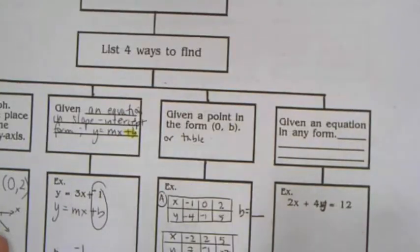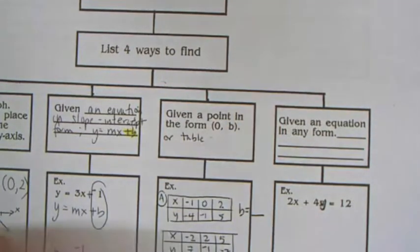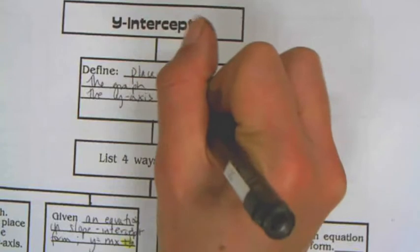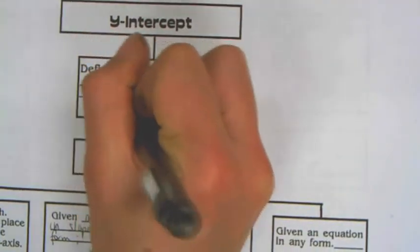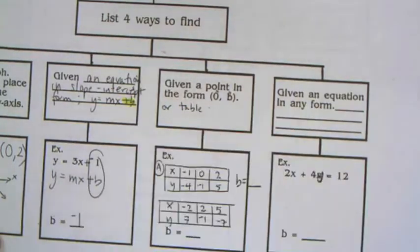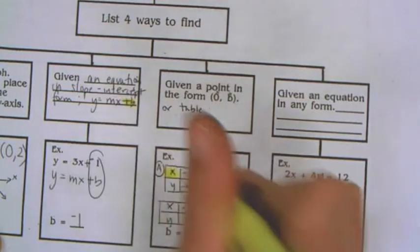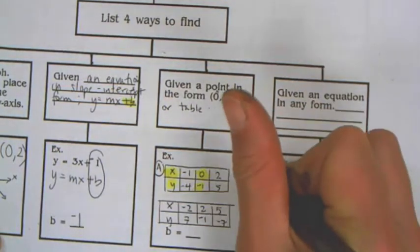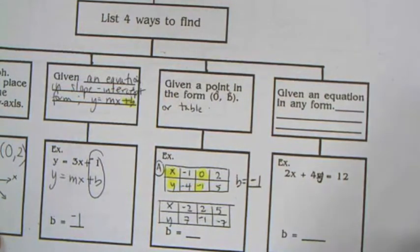You can also be given a table. You'll be lucky if the table has x = 0, because what defines where the line crosses the y-axis is the place where x is equal to 0. In this case, here's our x, there's our y. I can look at my table and if I have an x = 0, then that y-value will be my y-intercept. For this first one, the y-intercept is negative 1.